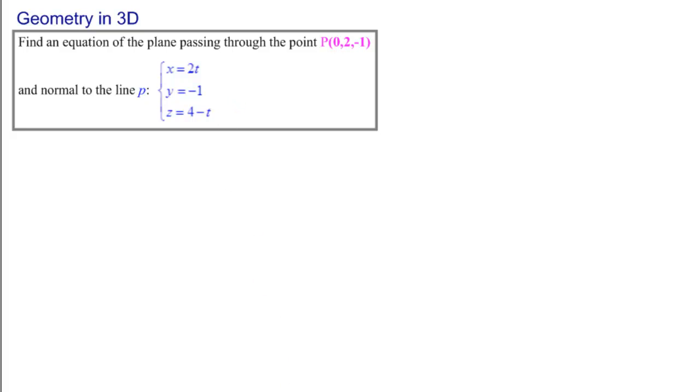Now, we know the equation of a plane given a point and a normal directional vector. What do we have here? We have a point, but we have a line. So we need from this line to make a normal directional vector.